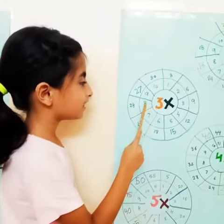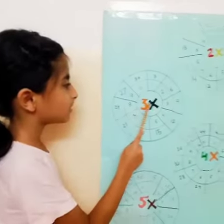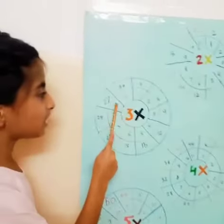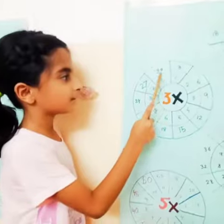3 8's are 24, 3 9's are 27, 3 10's are 30.